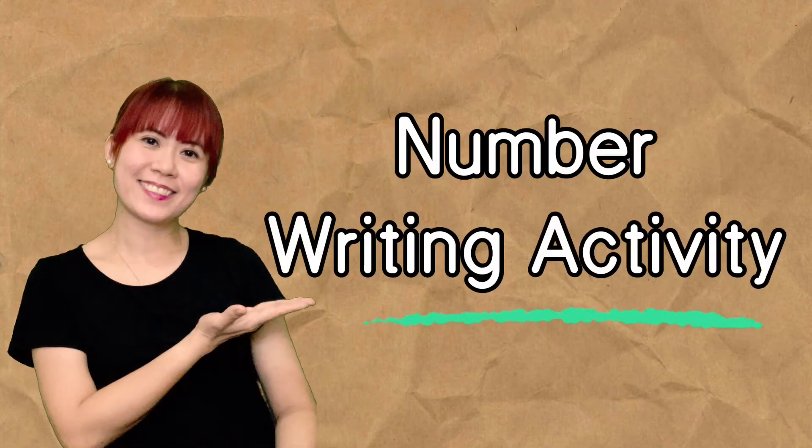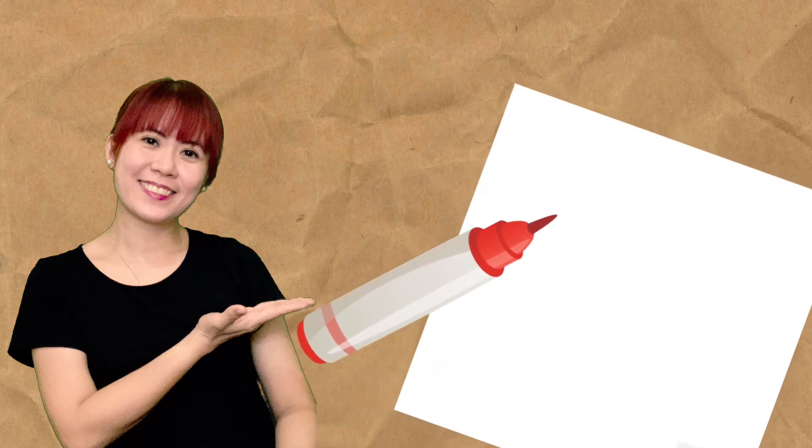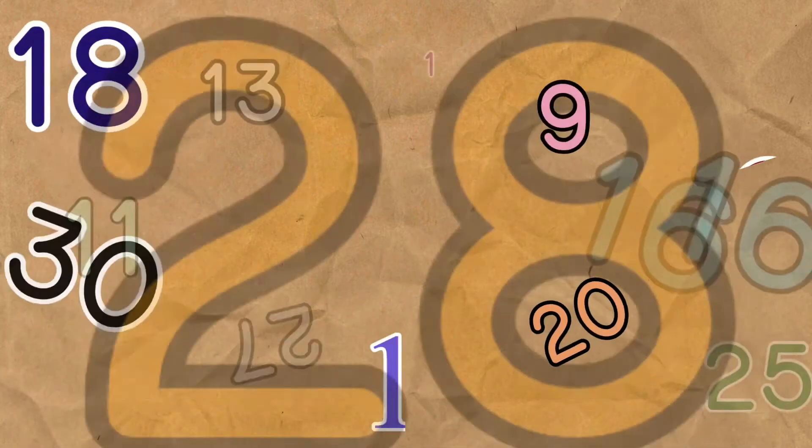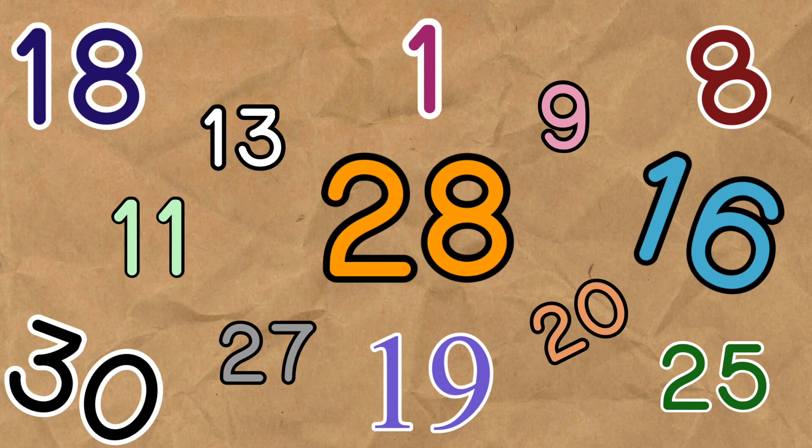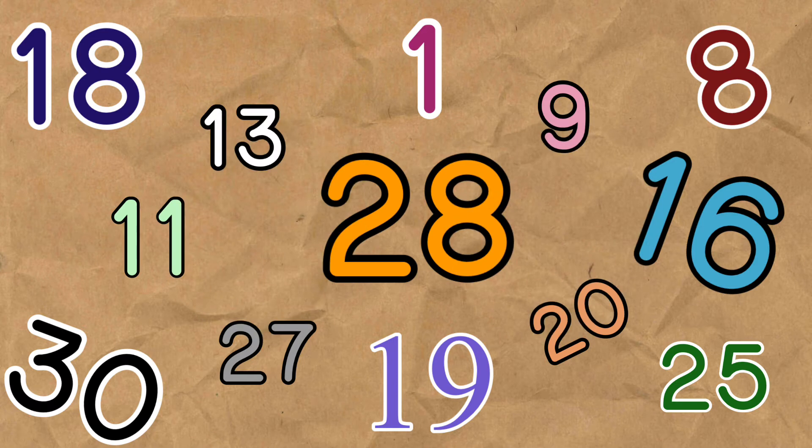Let's move on to our next activity. Using your laminated sheet and whiteboard marker, let's try to write the numbers that I'm going to say. Don't worry, there are clues on the screen. All you have to do is use your looking eyes. Let's begin!